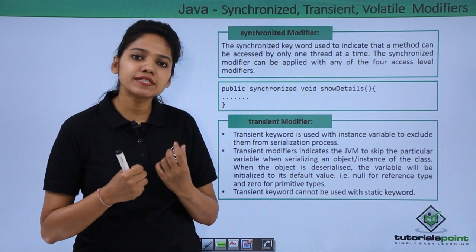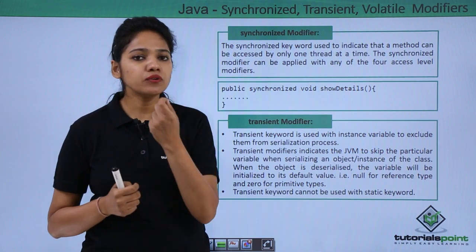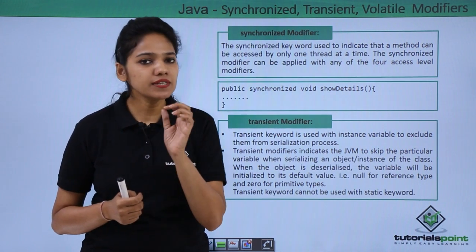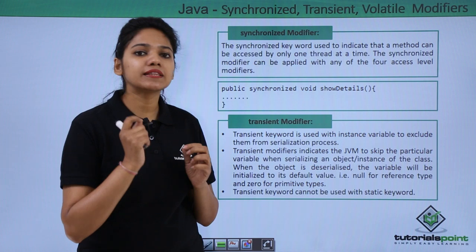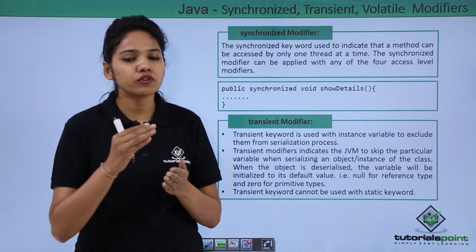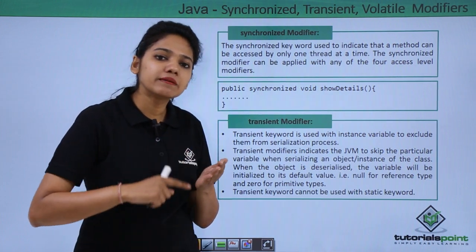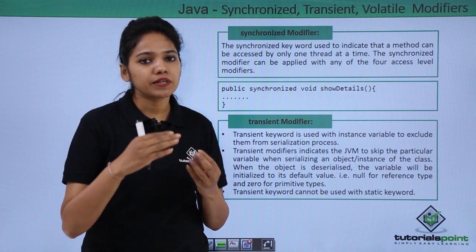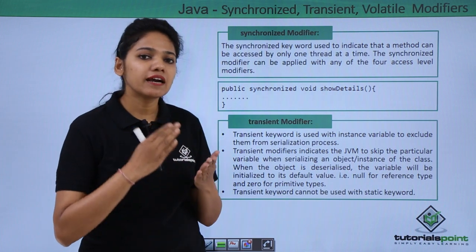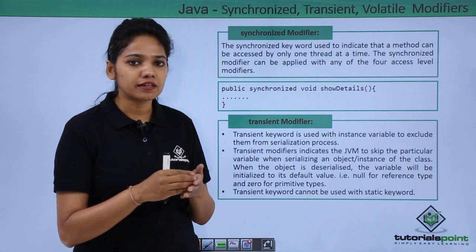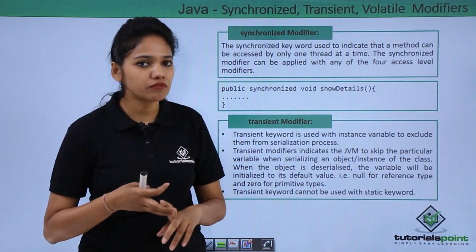In programming, a method which is declared as synchronized is locked by one thread. It means until unless that thread or task has not been completed, it will not free up that particular method. Therefore, this method cannot be called by any other thread until you free up this particular method. A synchronized method can be written with any type of access modifier.